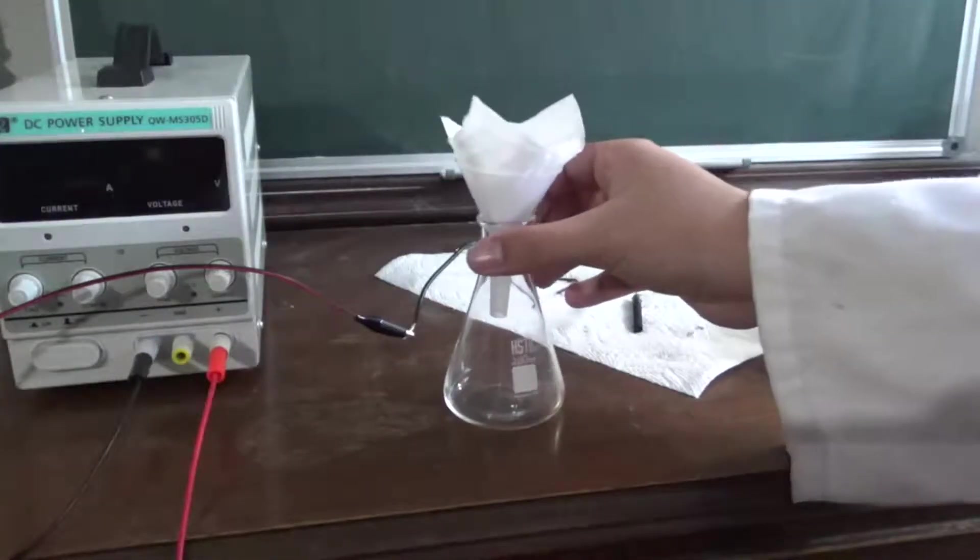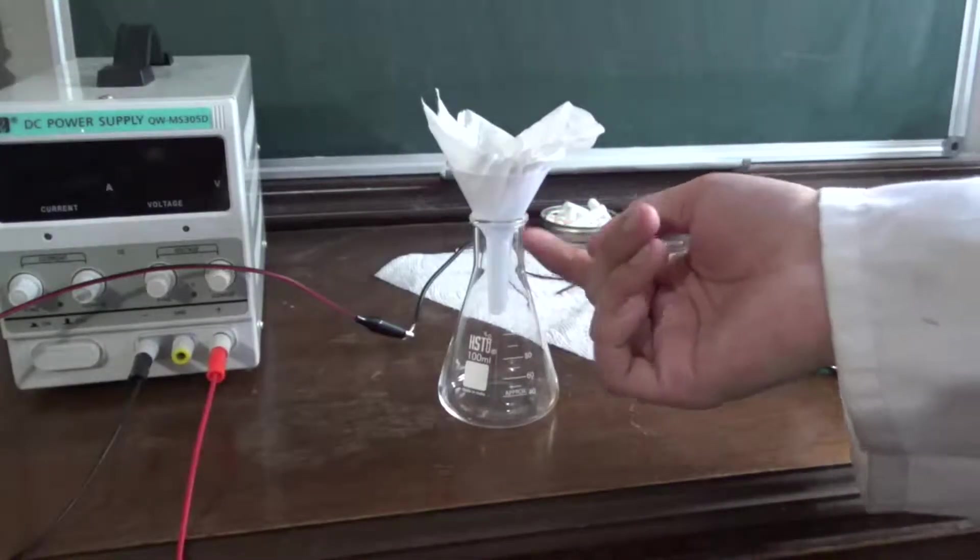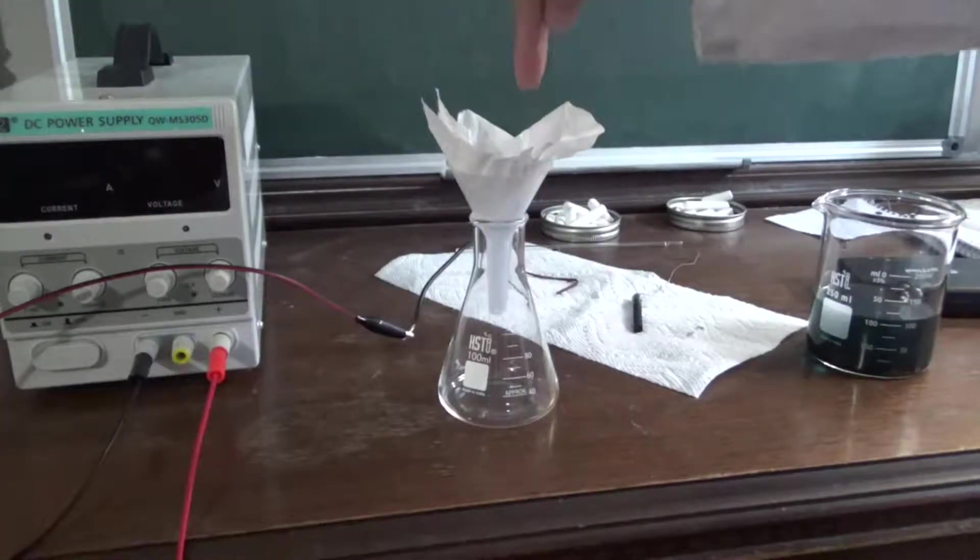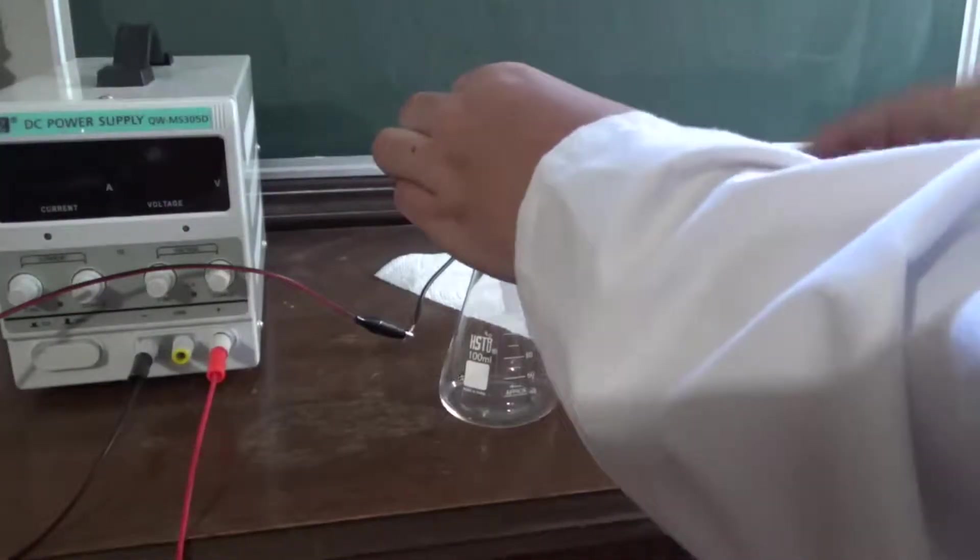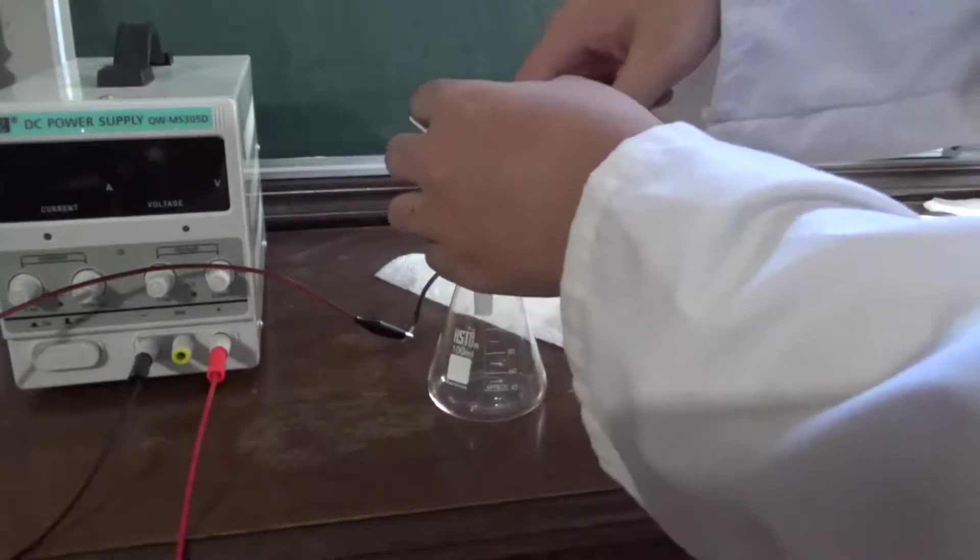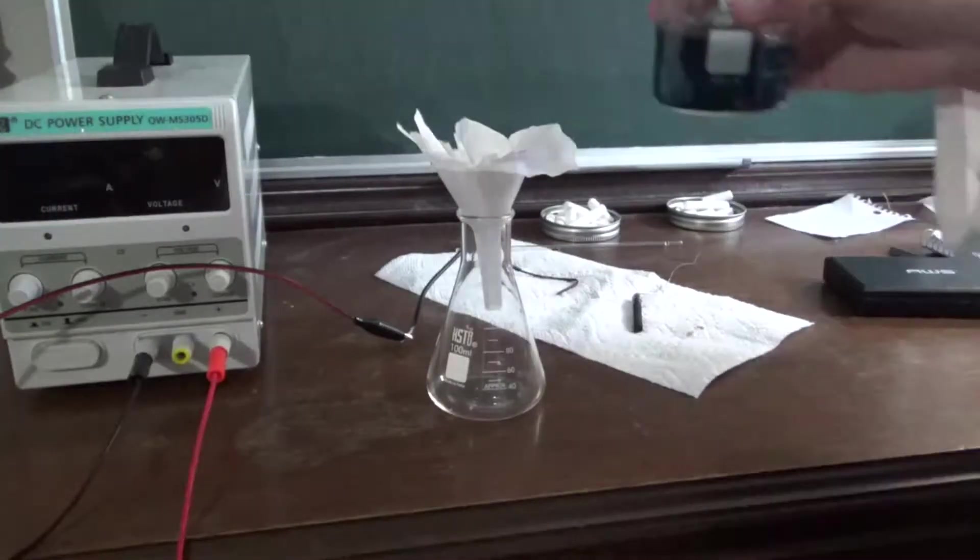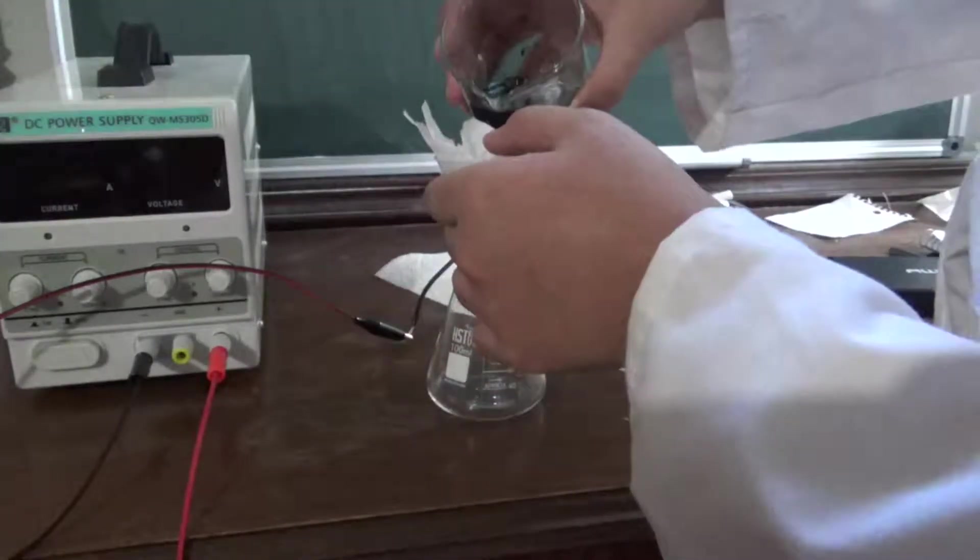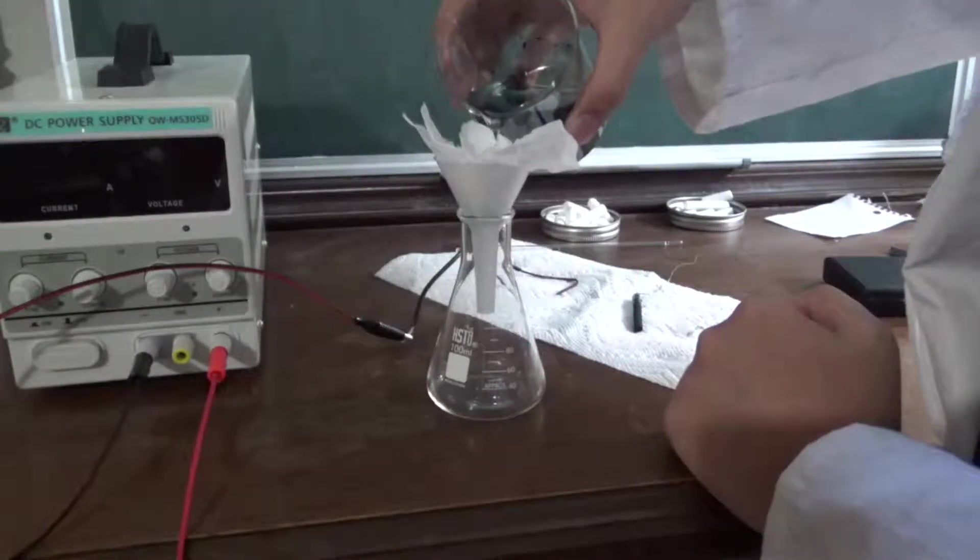Here is our filtering setup here. All it is is a funnel with actually a coffee filter in the top connected to an Erlenmeyer flask. And I'm going to pour this through our filter. And we should see all of the filtrate filter out.